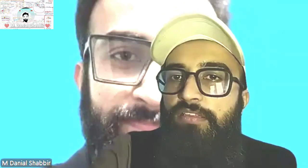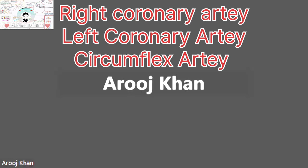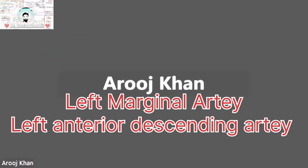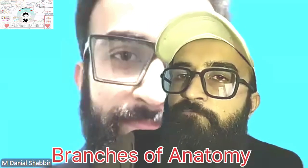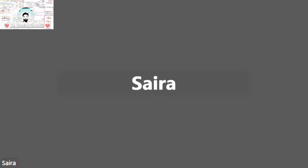What are the different branches of the coronary artery? Right coronary artery, left coronary artery, circumflex artery, left marginal artery, left anterior descending artery, diagonal artery. Knee joint — which bones make up the knee joint? The knee joint is made up of patella, tibia, fibula, and femur. What is anatomy? The science of the body and its parts and organs.